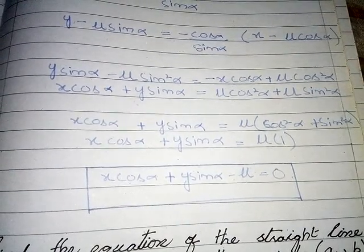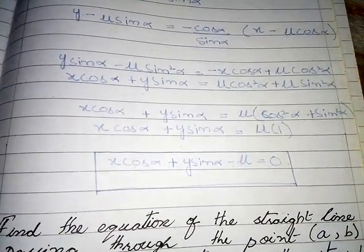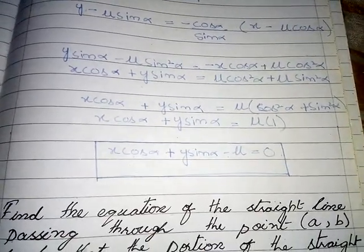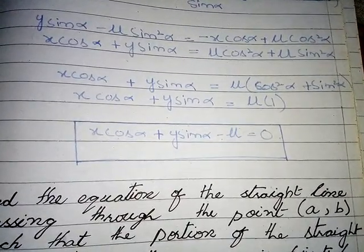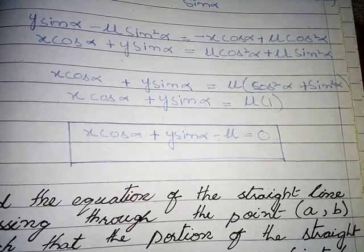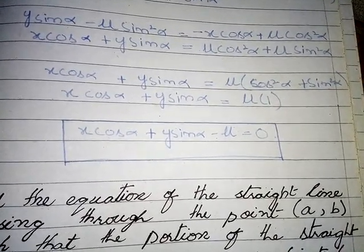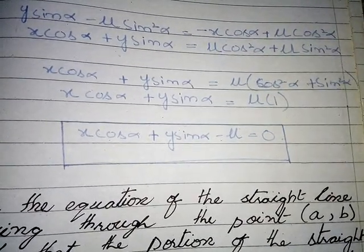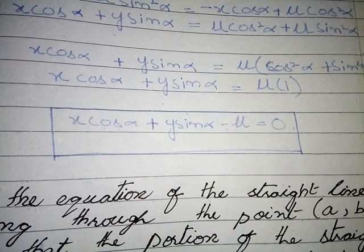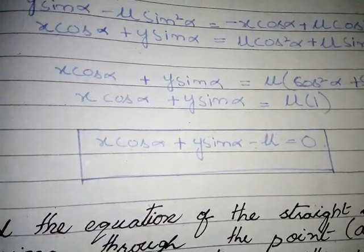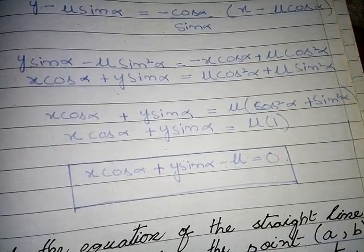Rearranging: x·cosα + y·sinα = μcos²α + μsin²α. Taking μ as common: x·cosα + y·sinα = μ(cos²α + sin²α). Since sin²α + cos²α = 1, we get x·cosα + y·sinα = μ. This is our required equation of the straight line.